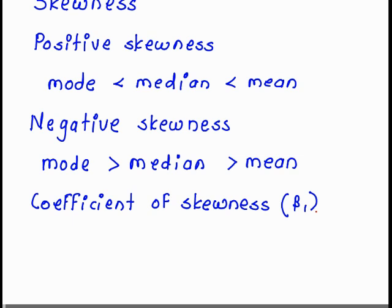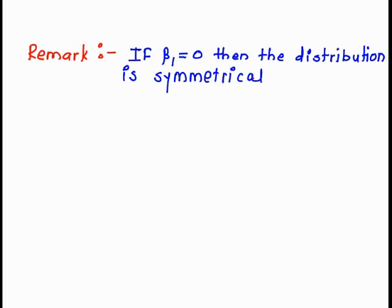The coefficient of skewness is denoted by beta 1. Beta 1 is equal to mu 3 square upon mu 2 cube. If beta 1 is equal to 0, then the distribution is called symmetrical.